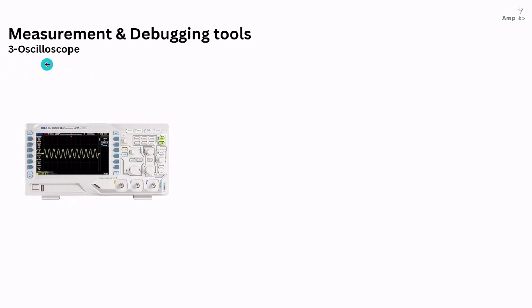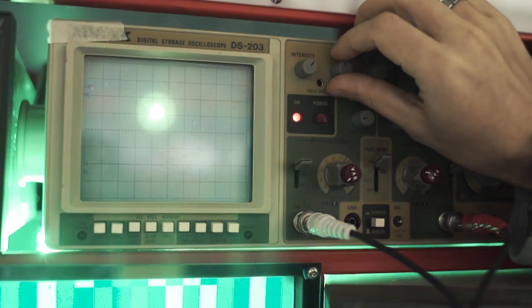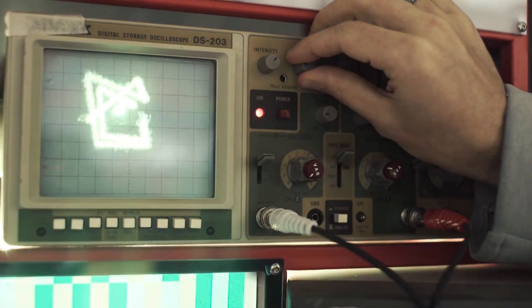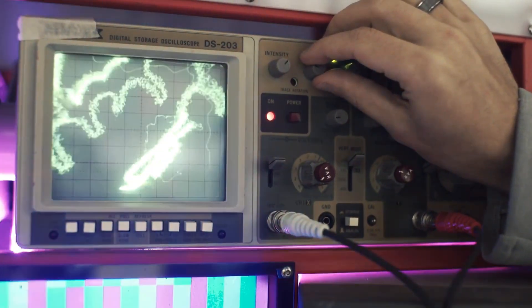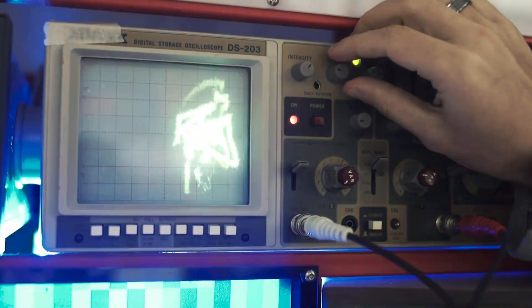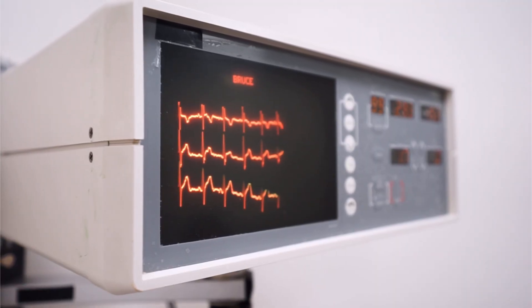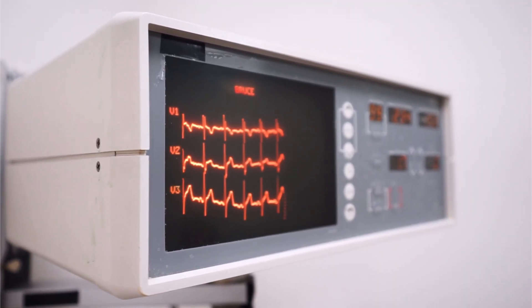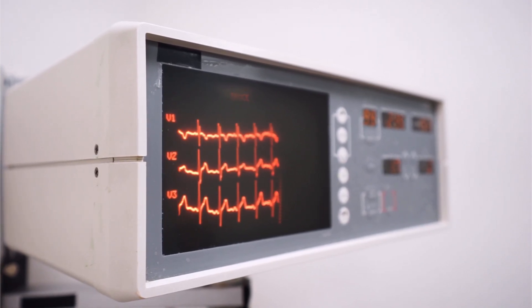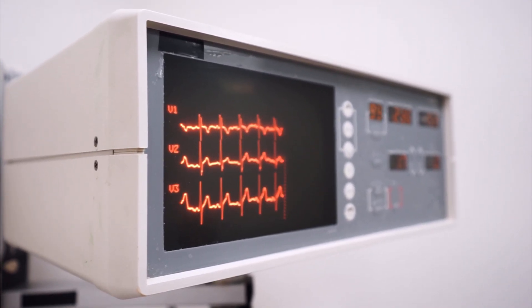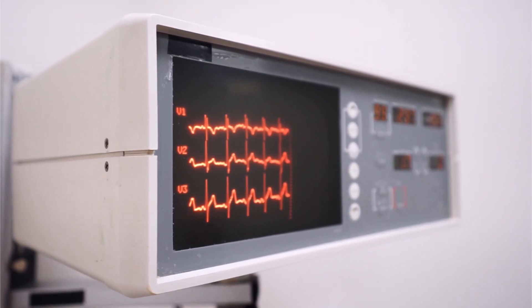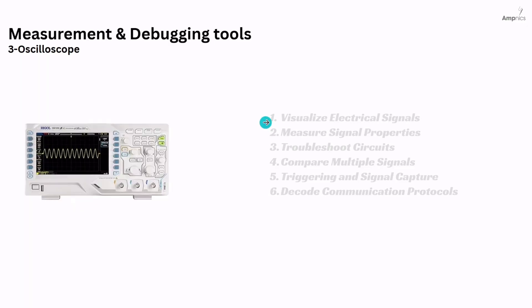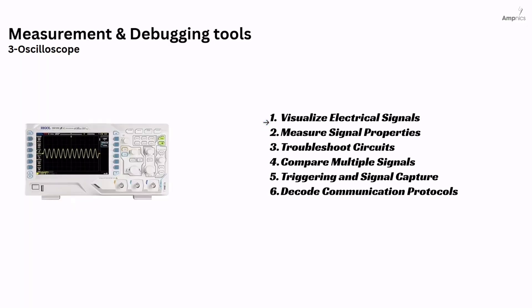Number three: Oscilloscope. An oscilloscope is an electronic test instrument that displays the changing of signal voltages over time as a waveform on a screen. It is essential for analyzing the behavior of electronic circuits. The main function of an oscilloscope is to visualize electrical signals and measure signal properties such as voltage, frequency, period, rise and fall time, pulse width, and duty cycle.